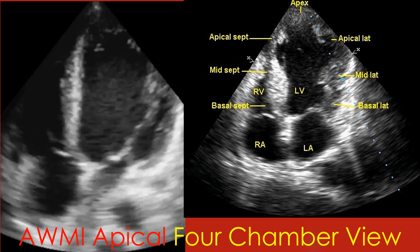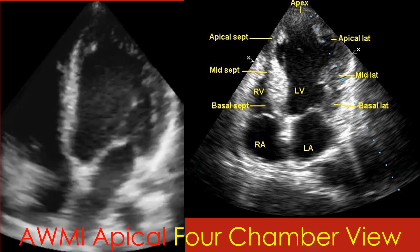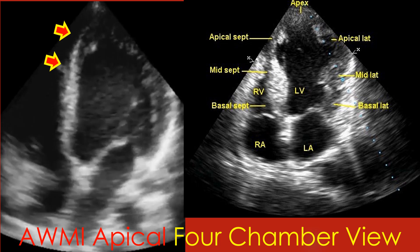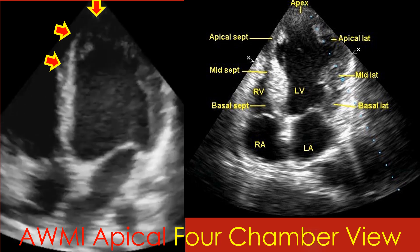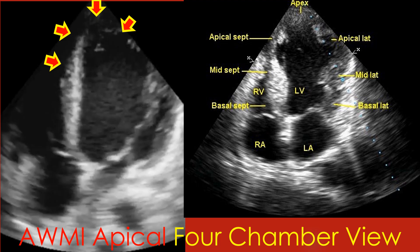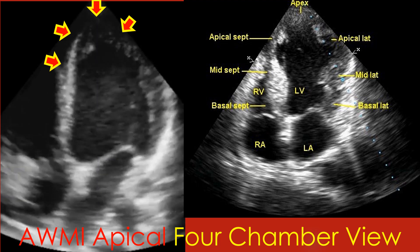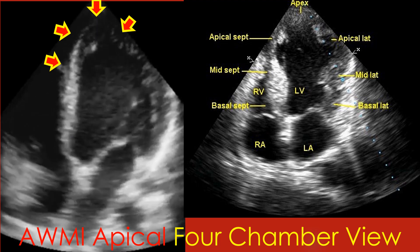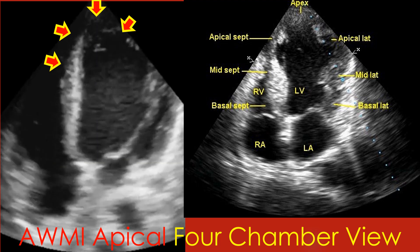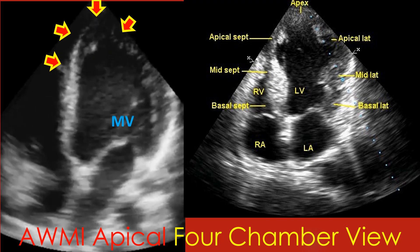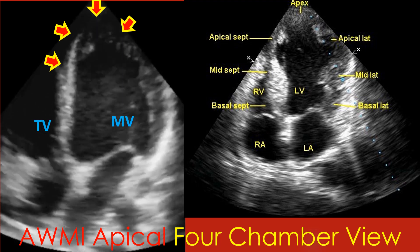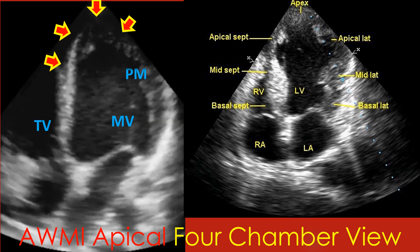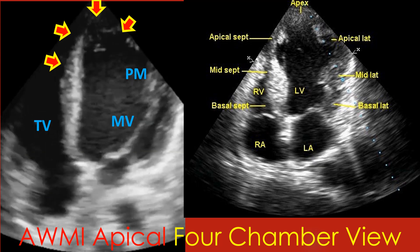Apical four chamber view showing hypokinesia of mid septal, apical septal, apical, and apical lateral segments. Other segments in this view are basal septal, mid lateral, and basal lateral. Mitral and tricuspid valves are seen well. Chordae tendinae and papillary muscle are also seen.